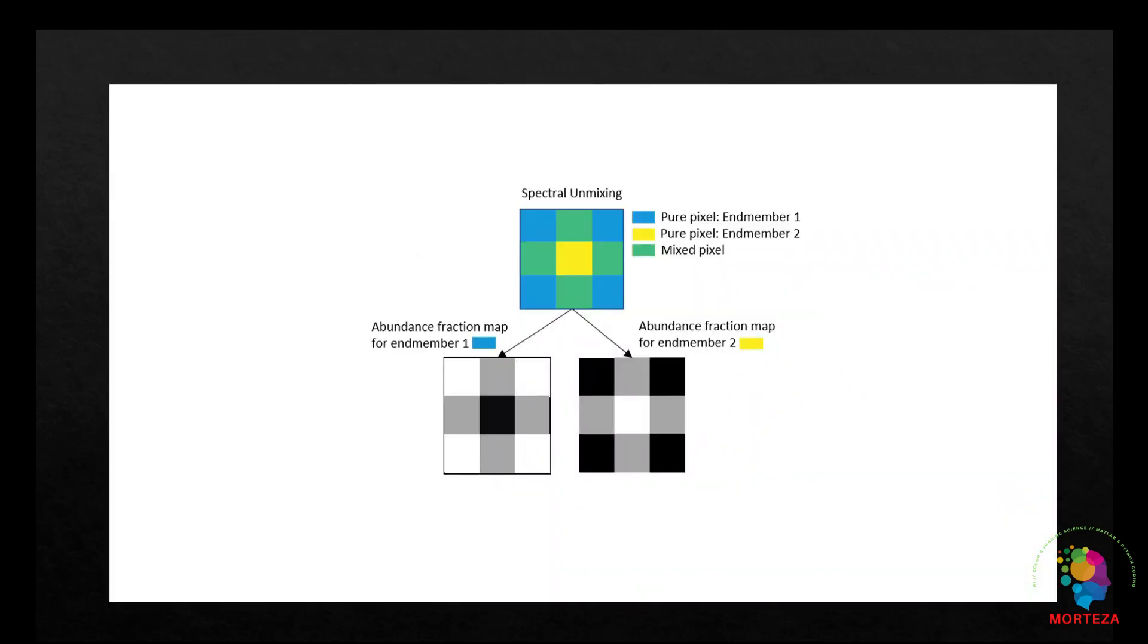The process of identifying and extracting these end members from hyperspectral data is known as end member extraction or spectral unmixing. The spectra of the end members are prominent features in the hyperspectral data and can be used for efficient spectral unmixing, segmentation, and classification of hyperspectral images.